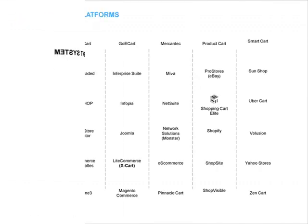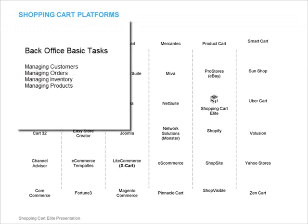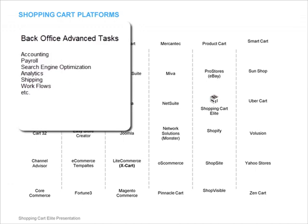Most shopping cart platforms offer a front-end website and a very basic back office system. The basic back office system will usually have simple tools to perform basic tasks such as managing customers, orders, inventory, and products. However, advanced tasks such as accounting, payroll, SEO, analytics, etc. will have to be done through third-party software.